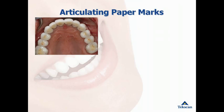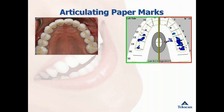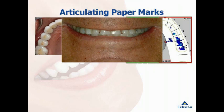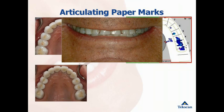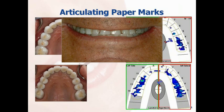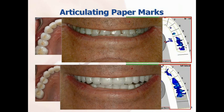Articulating paper and waxes provide limited information on contact timing and force. The T-Scan system is a valuable tool that aids in the diagnostic process of analyzing a patient's bite and showing what is and what is not functioning properly. When a bite is unstable, it can cause pain, teeth to crack and break, dental restorations to crack and break, gum disease, tooth loss, headaches, and TMJ disorder. A T-Scan evaluation is a simple process that can help aid in the diagnosis and treatment of these problems.